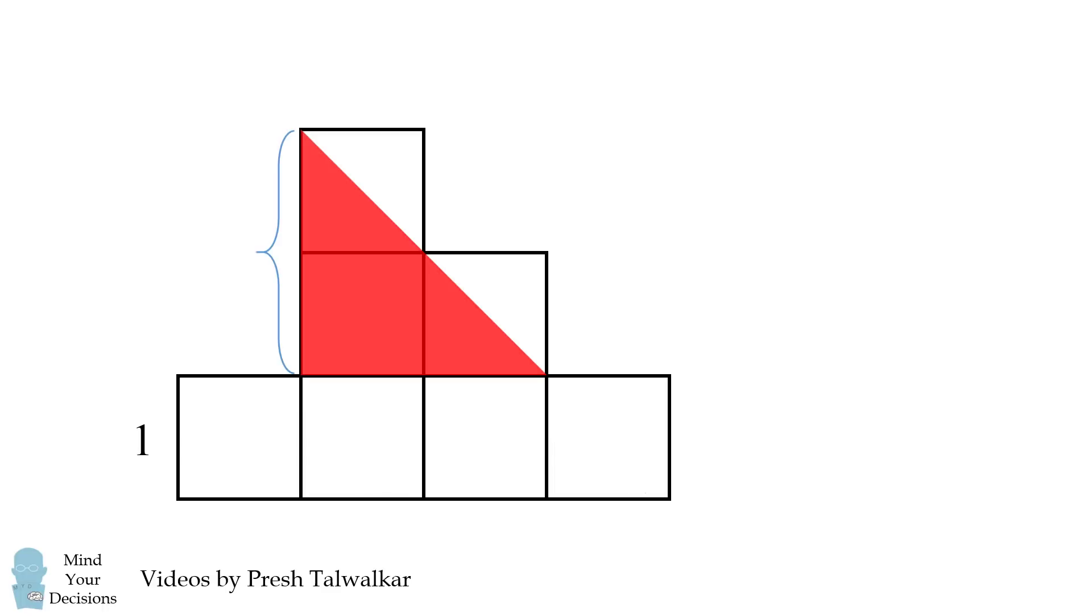Now this triangle has a base of 2 and a height of 2. So its area will be 2 times 2 all over 2, which is 2.